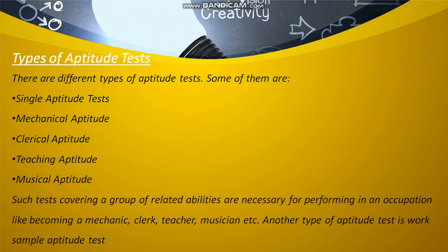Types of Aptitude Test include: Single Aptitude Test, Mechanical Aptitude Test, Clerical Aptitude Test, Teaching Aptitude Test, and Musical Aptitude Test — covering a group of related abilities necessary for performing in an occupation like becoming a mechanic, clerk, teacher, musician, and so on. Another type of aptitude test is the Work Sample Aptitude Test.